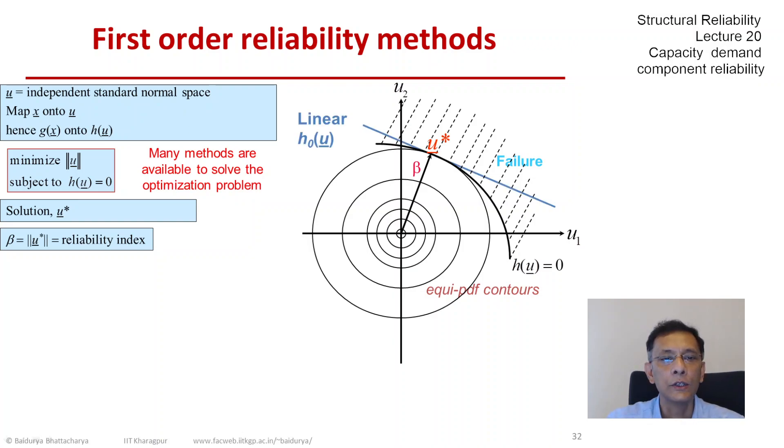To do that, we must also mention that this beta corresponds to a failure probability not of the h equals 0 limit state that you see, but rather a hyperplane, a line in this case, of h_0 of u.